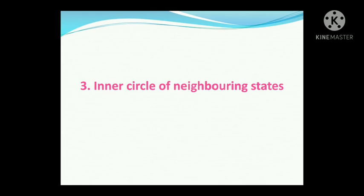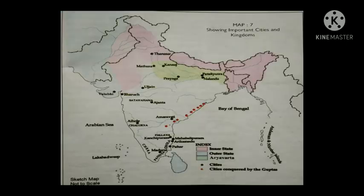The third one is neighboring states. In this map, you can see the area marked in pink color — that denotes the inner circle of neighboring states. It included Assam, coastal Bengal, Nepal, and many Gana-sanghas in the northwest. The rulers in these areas brought tribute to Samudragupta, followed his orders, and attended his court.